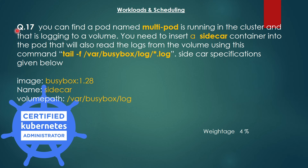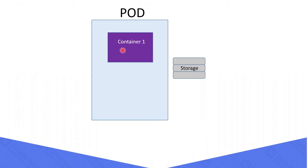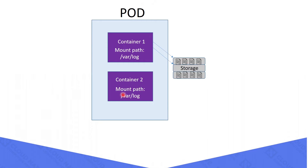The 17th question is: you can find a pod named multipod running in the cluster that is logging to a volume. You need to insert a sidecar container into the pod that will also read the logs from the volume using the tail command. The sidecar image should be busybox:1.28, the container name should be sidecar, and it needs to mount the volume at /var/busybox/log. I will explain the question with a diagram. We have a container mounted into storage, so the logs will be stored there. We need to add another container to the pod and mount the same storage volume, so the sidecar container can access the same log files.